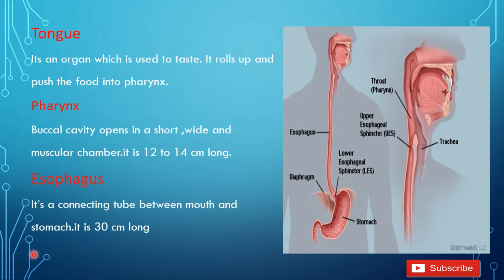The next part is the oesophagus. It is a connecting tube between the mouth and the stomach. It is 30 cm long. It is the passage which connects the pharynx with the stomach.